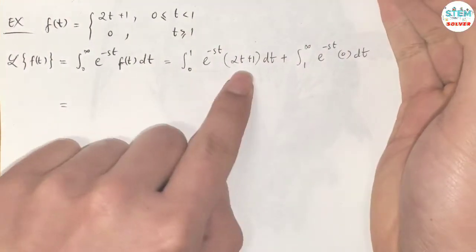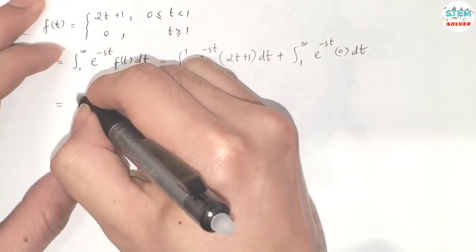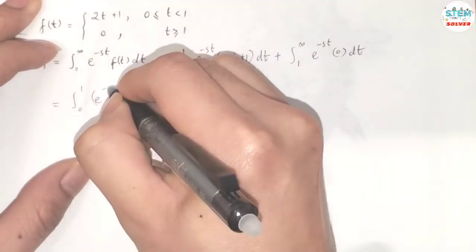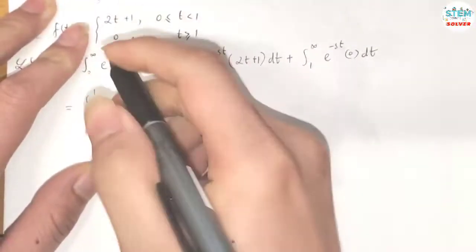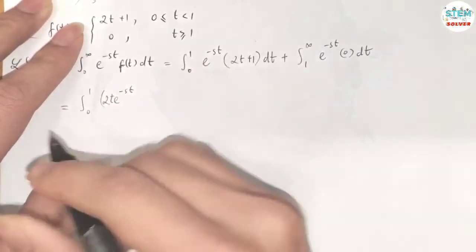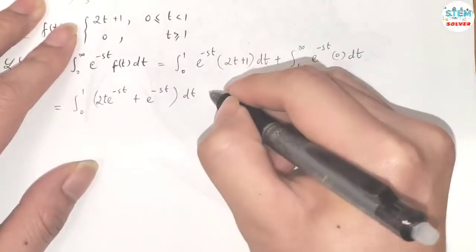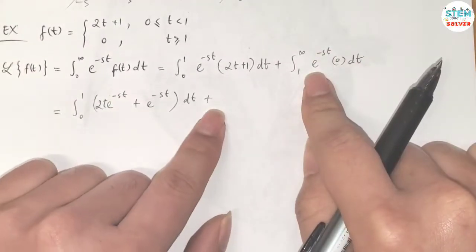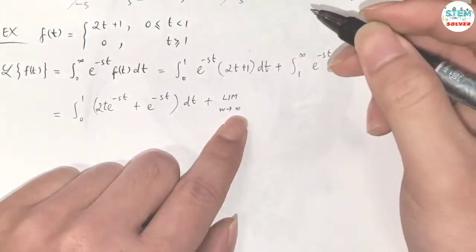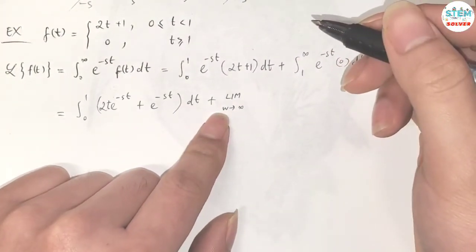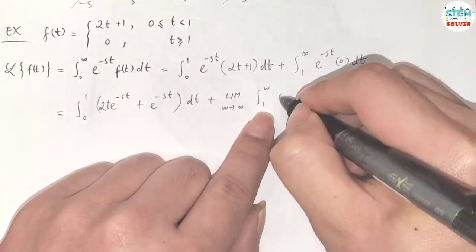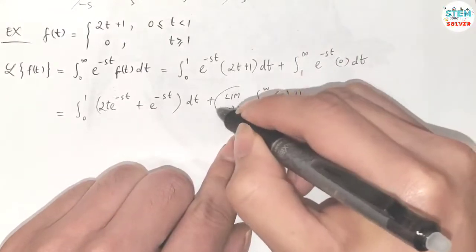For the second integral, we have an improper integral, so we have to take a limit as w goes to infinity. The integral from 1 to w of 0 dt is simply 0. So we only work on the first integral.